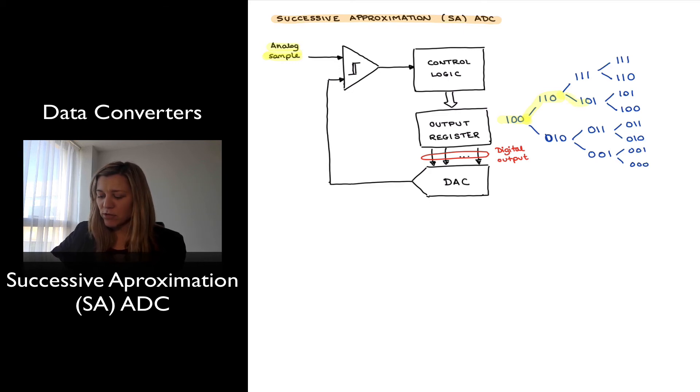Then I know that I need to set the second most significant bit to zero, and then test for the last bit. And again, the same process. Is that greater than or smaller than the analog sample? Let's imagine that that is smaller than the analog sample, and therefore I know that my analog sample value is 101 in this particular example.